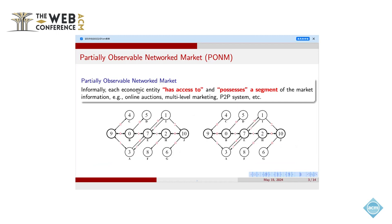So informally, in that market, each economic entity has access and only possess a segment of the market information. For example, the technical examples include online auctions, multi-level marketing on the P2P system and so on.